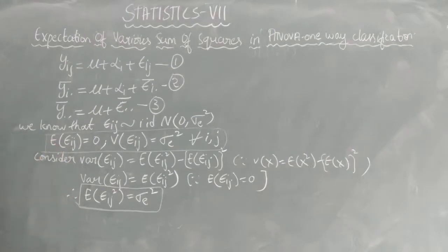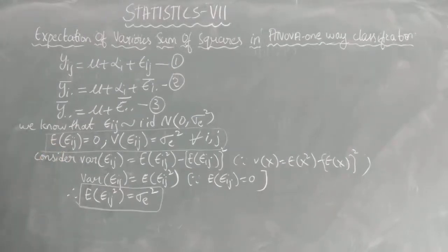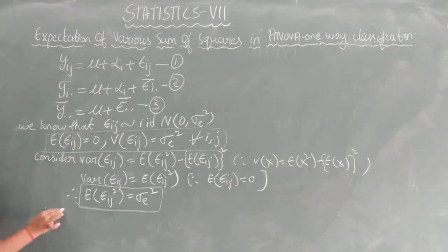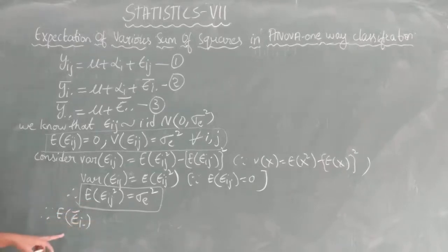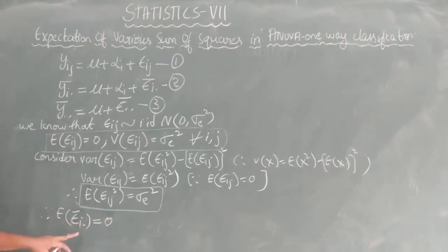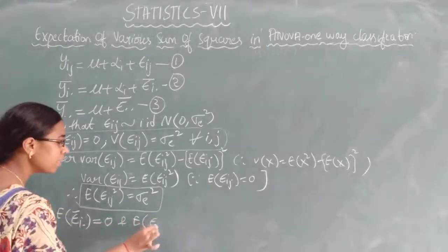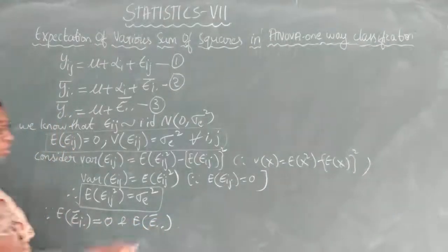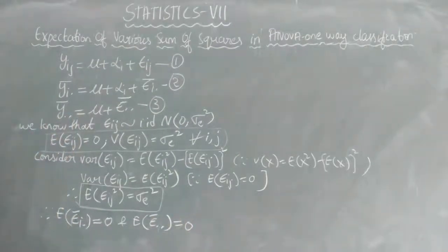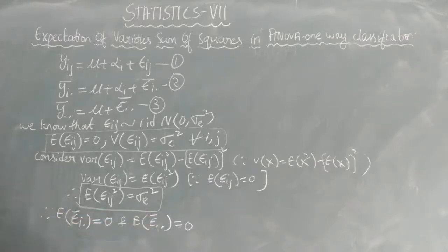Since E[εij] = 0, the mean of the treatment-level error mean is also 0. So E[ε̄i·] = 0. Similarly, the expectation of the overall error mean is also 0: E[ε̄··] = 0. Since the expectation of the error is 0, all the expected values — including the treatment mean and overall mean of errors — will also be 0.